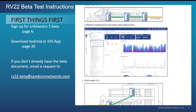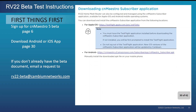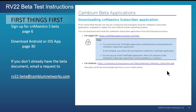If you scroll all the way down to page 30, you'll see some links for how to get access to the subscriber app software. If you're going to test on Apple iOS devices, you'll first need to install the Apple TestFlight and then request access to the software through that program.